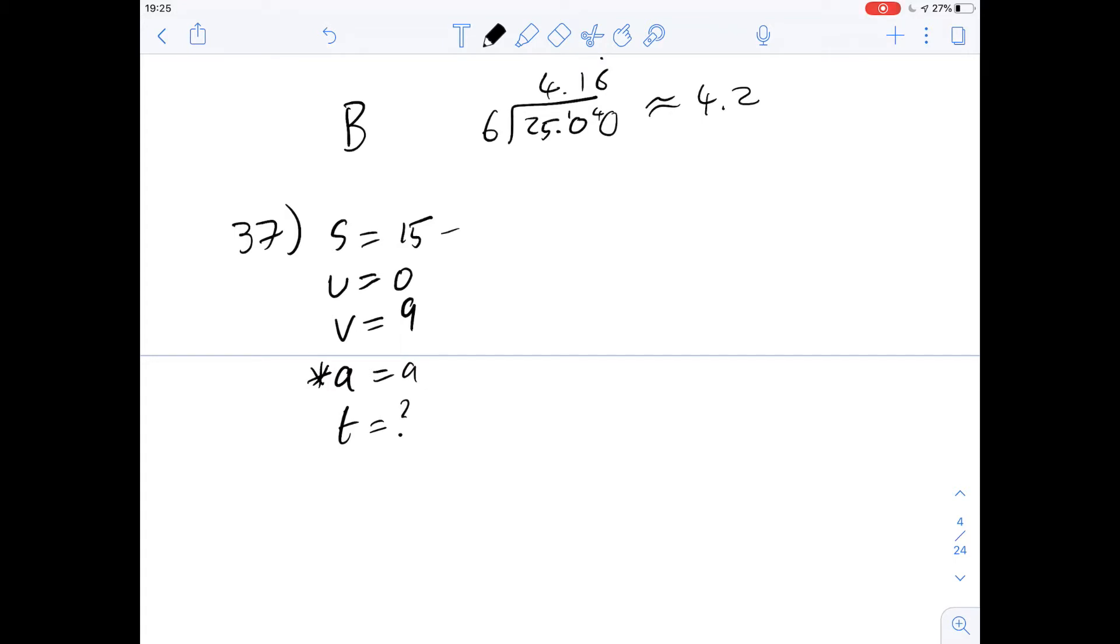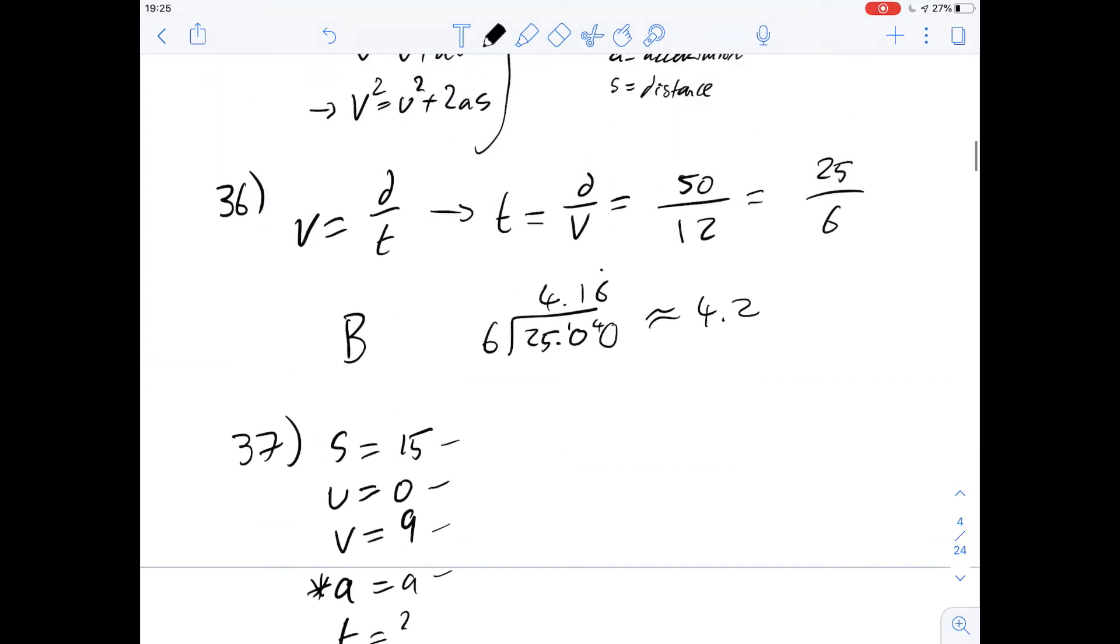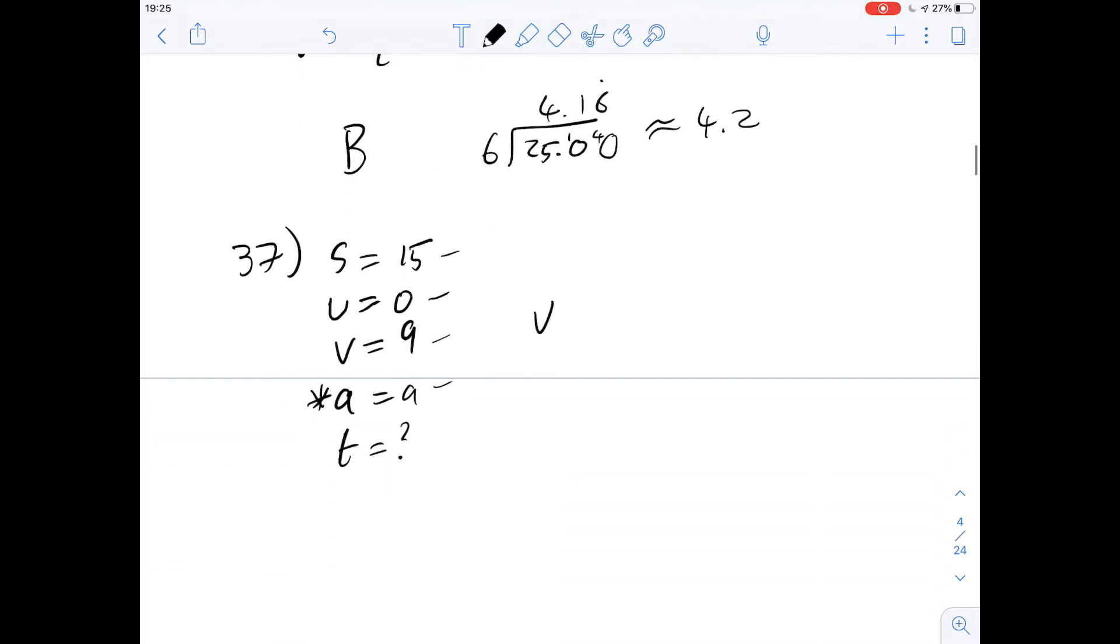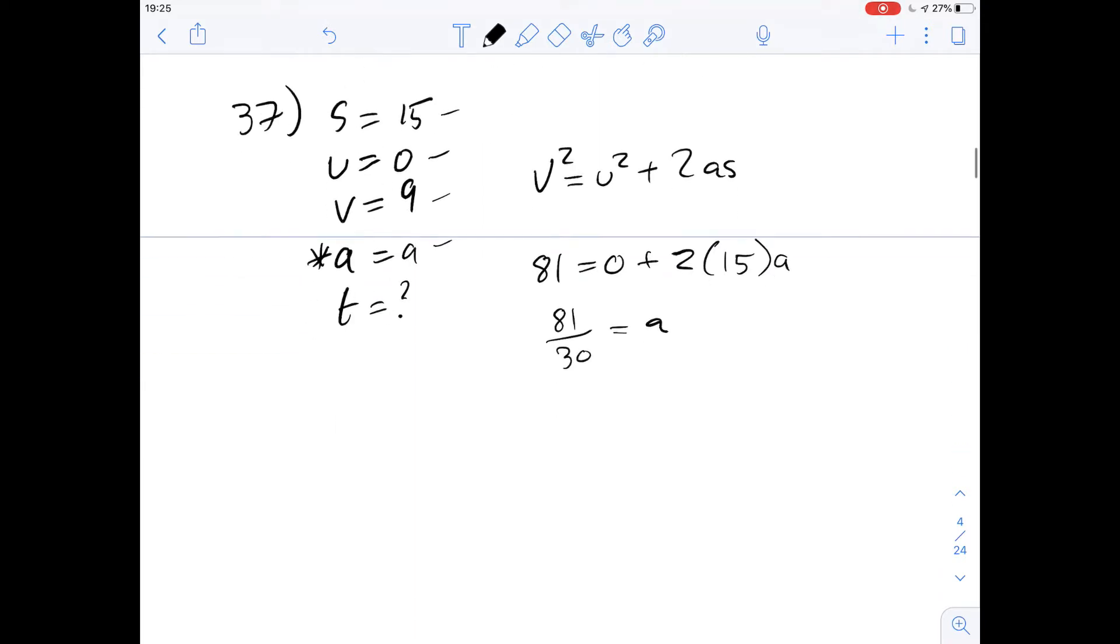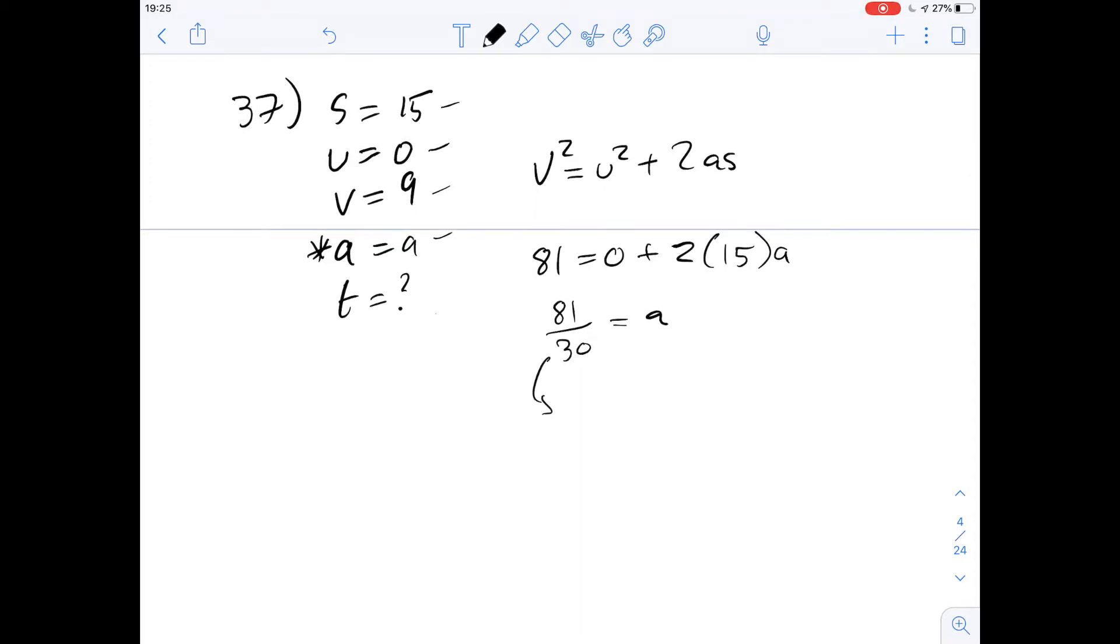Okay so which equation uses s, u, v and a out of the ones that we've been given here and it will be this final one, v squared equals u squared plus 2as. So if we just put in our values here we get v squared which is going to be 81 equals 0 plus 2 times 15 times a. So 81 over 30 is going to be a here. We can simplify this down to 27 over 10 which gives us 2.7 and that's the estimate that we've got from our readings of the graph and the one that's closest to this is going to be 2.5 metres per second squared so that's going to be answer D in this case.